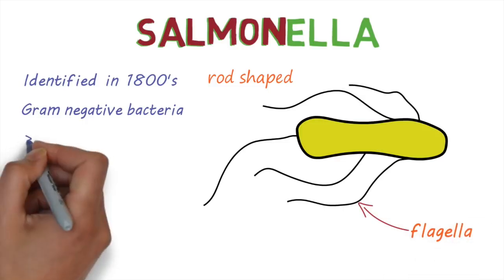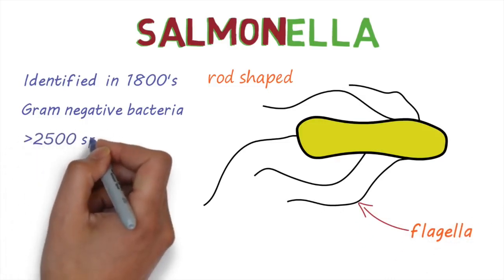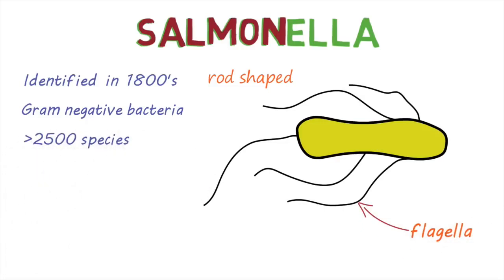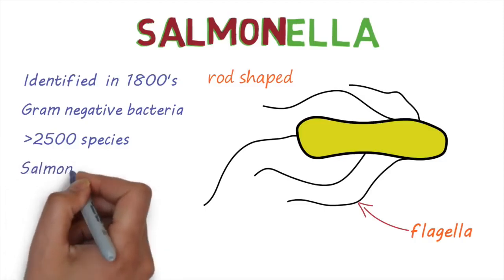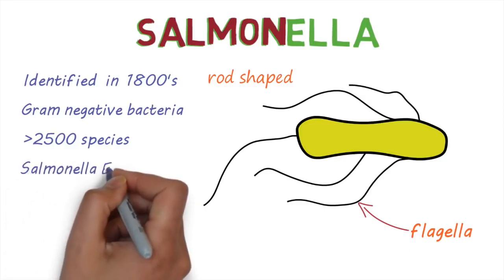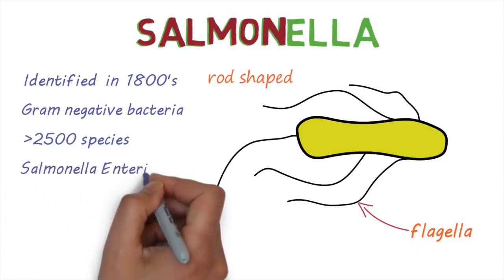There are over 2,500 different types of the bacteria. Most human disease is caused by the bacteria belonging to a subspecies called Salmonella enterica.